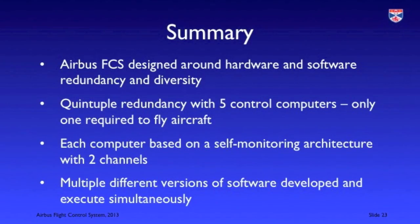In summary, the Airbus flight control system is a very good example of how redundant hardware and software are used to achieve fault tolerance. It is based on quintuple redundancy — five computers — where each computer has two channels, each running different processors and software. Of the five computers, three are primary and two are secondary, also running different hardware and software. To my knowledge, there have been no failures of the flight control system in the history of Airbus operation, so the overall approach has been successful.